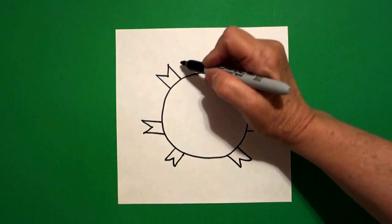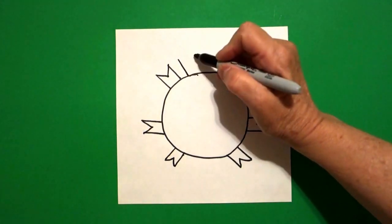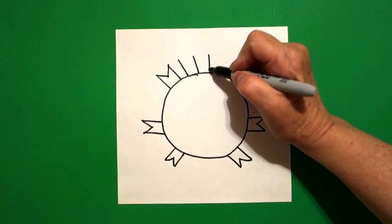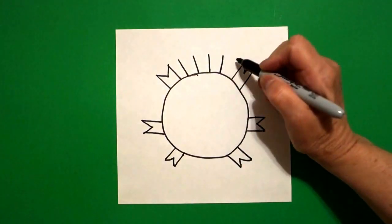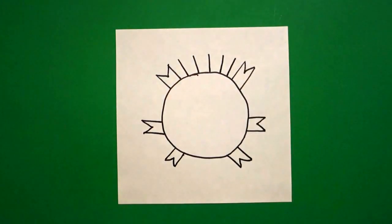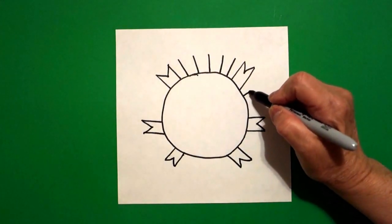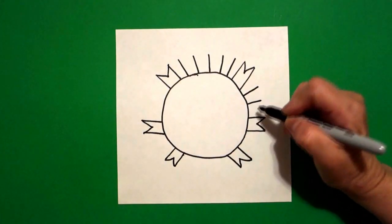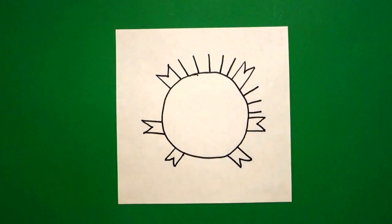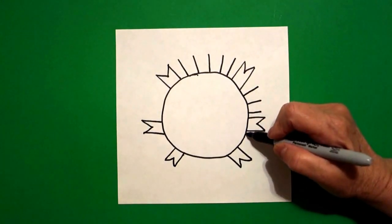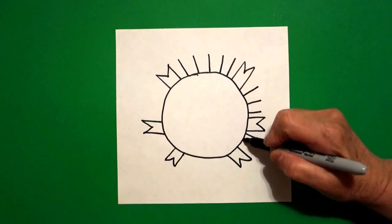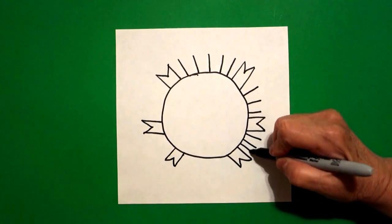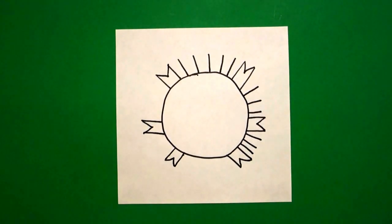Now come back to the top and we're going to draw one, two, three, four, five straight lines. Down at the bottom we're going to draw one, two, three straight lines. Jump over, one, two, three straight lines.